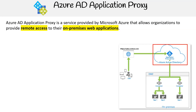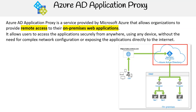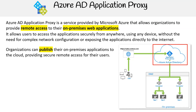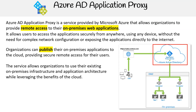The next topic we'll be covering is Azure AD Application Proxy. Azure AD Application Proxy is a service provided by Microsoft Azure that allows organizations to provide remote access to their on-premises web applications. It allows users to access the applications securely from anywhere using any device, without the need for complex network configuration or exposing the applications directly to the internet. Organizations can publish their on-premises applications to the cloud, providing secure remote access for their users. The service allows organizations to use their existing on-premises infrastructure and application architecture while leveraging the benefits of the cloud.